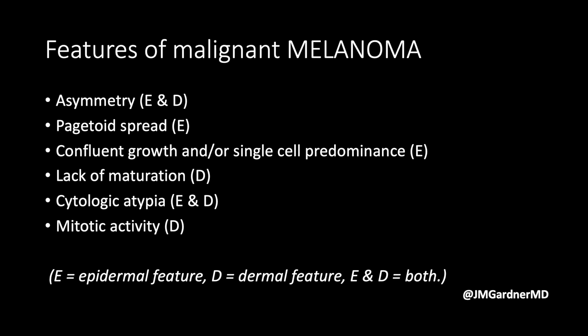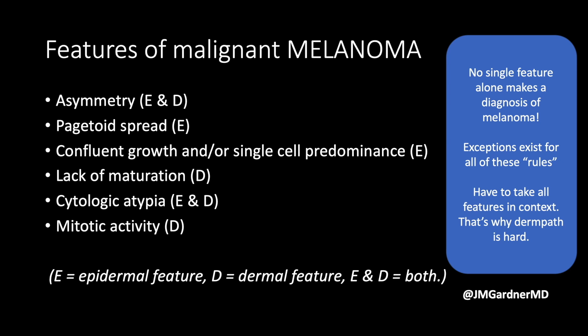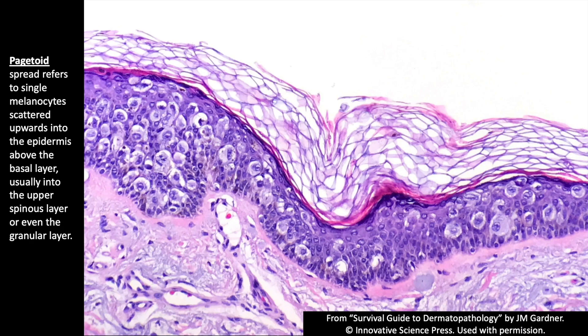If I see pagetoid spread, confluent growth, or an abundance of single cells in the epidermis; lack of maturation in the dermis; severe cytologic atypia; or dermal mitotic activity — those all make me think about melanoma. That said, I can see nevi that have mitoses, atypia, or a weird pattern of maturation. You can even see confluent growth in a recurrent nevus over a biopsy site. There are exceptions to every one of these rules, and that's part of why dermatopathology is so challenging.